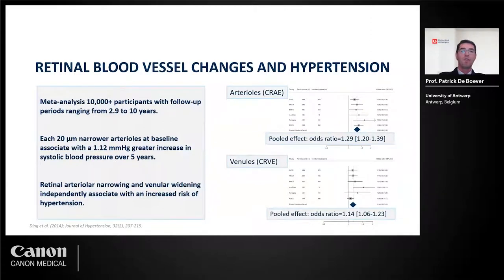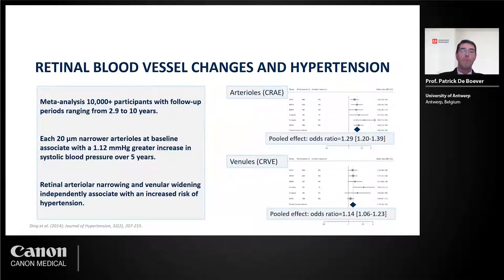These types of measurements have been used for a long time to associate microvascular changes with different cardiovascular outcomes. One of the first important studies is a meta-analysis published in 2014 that linked changes in retinal blood vessel widths — arterioles and venules — with the development of hypertension. In a study of more than 10,000 participants combining multiple longitudinal cohort studies, researchers found that when arterioles narrow, this leads to a 29% higher risk of developing hypertension, and that wider venules were also linked with increased cardiovascular risk.